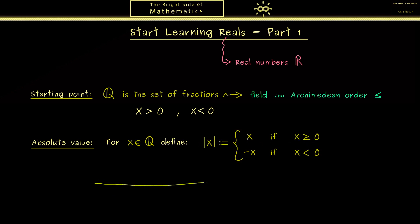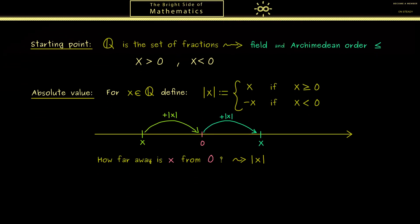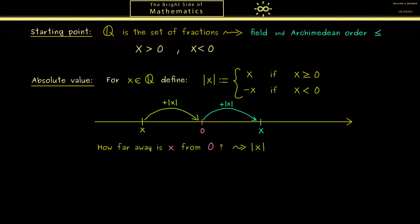So maybe a visualization on the number line is helpful here. Now if we have a positive number x, the absolute value tells us what we have to add to 0 to get to this number. On the other hand, if we have a negative number x, the absolute value tells us what we have to add to this number to get to 0. Or to put it in other words, in both cases the absolute value gives us the distance between x and 0. So if you want to know how far away x is from 0, you just take the absolute value. So this measuring of distances will be very important for our construction of the real numbers.